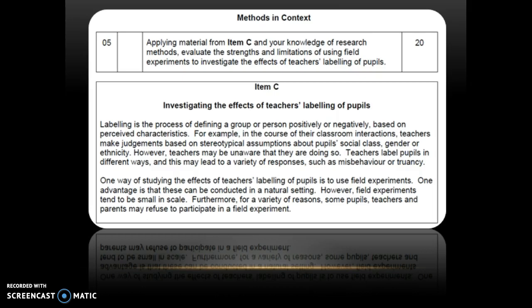Let's look at this question in the context of the 2017 summer paper from Paper 1, A-level. It was asking you to apply the material from the item — you'll see that up here — and your knowledge of research methods to evaluate strengths and limitations of using field experiments to investigate the effects of teachers' labelling of pupils. Here you need to show good AO1 of the strengths and weaknesses of a field experiment. I would follow PETS: practical, ethical, theoretical issues.